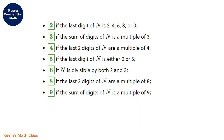And for three, this is something very useful. If the sum of the digits of n is a multiple of three — for example, we have the number 123. We can do one plus two plus three. The sum of the digits is six. As six is a multiple of three, the number 123 is divisible by three.